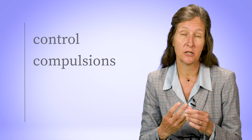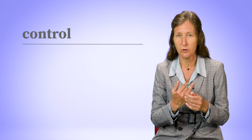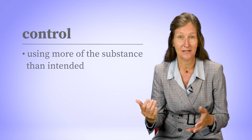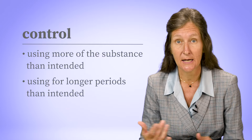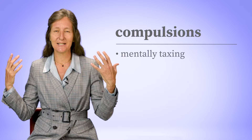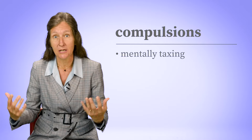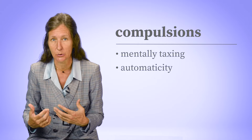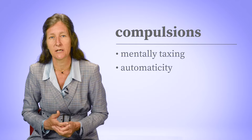Control, compulsions, cravings, and consequences. Control is just what it sounds like — using more of the substance than intended, in this case alcohol, or for longer periods than intended. Compulsion means a whole lot of mental real estate taken up with thinking about using, planning using, maybe hiding use, and also a level of automaticity to the use — even when we didn't plan to initiate use, we found ourselves using.